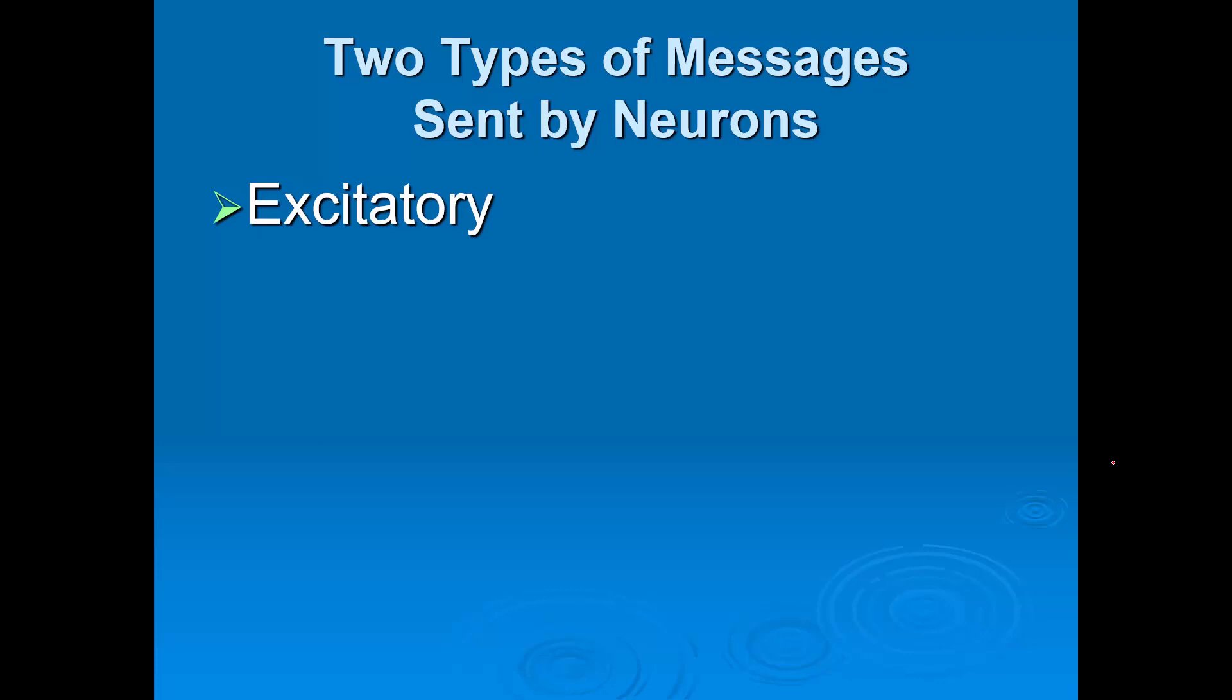What we mean here is when an excitatory message is sent by a neuron, it's increasing the chance that the message will be sent to where it needs to go. In other words, it's exciting the neuron. That's an easy way to think of it. An example of that would be pain. Let's say you stub your toe. That information travels up your leg through your spine to reach the pain part of the brain.